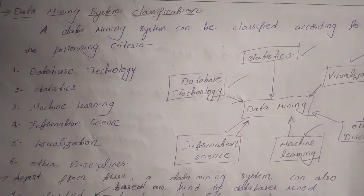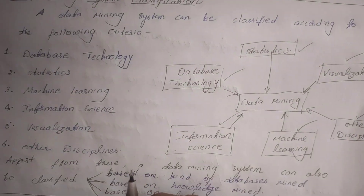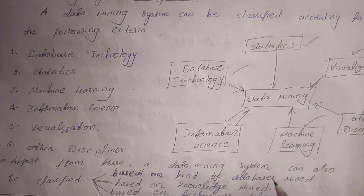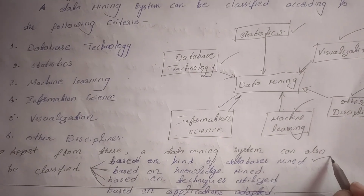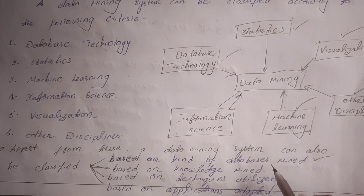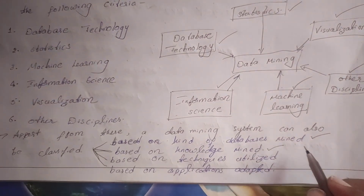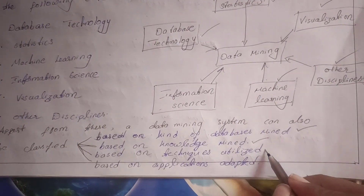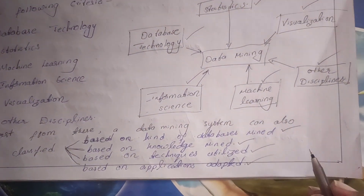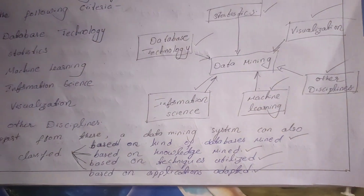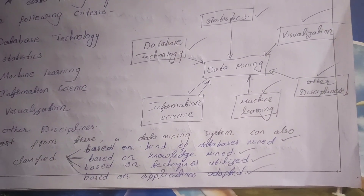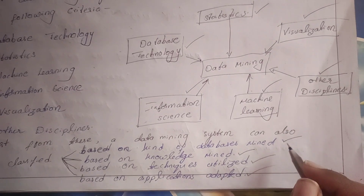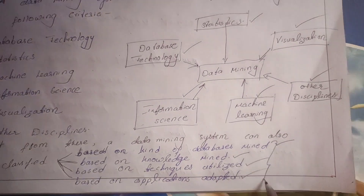Apart from these general classifications, data mining systems are also classified based on: kind of databases mined, knowledge mined, techniques utilized, and applications adapted. We will now discuss each of these classifications.